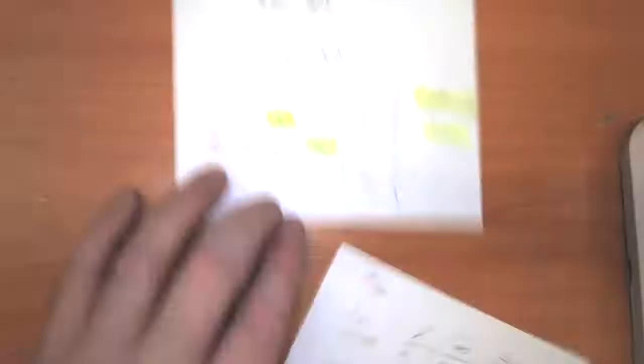That's what we mean by indeterminate forms — the same applies for 0 over 0. There are a couple of other indeterminate forms, but these are the ones we'll focus on in an introductory calculus class. In the next video, I'm going to talk about L'Hopital's Rule, which gives us a technique for solving cases with the indeterminate forms 0 over 0 or infinity over infinity. It's really helpful.